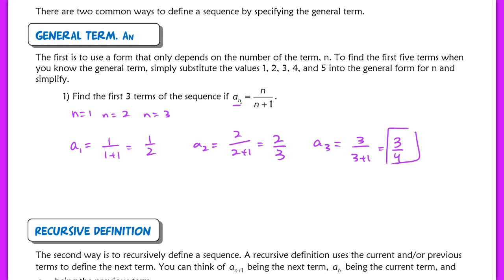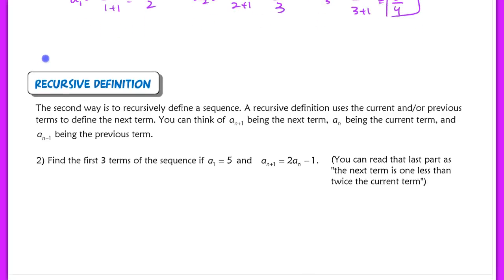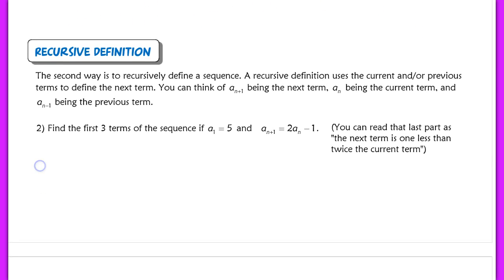Sometimes a sequence is defined recursively. A recursive definition means you have to know the current or previous term to define the next term. So a sub n plus 1 is the next term, a sub n is your current term, and a sub n minus 1 is your previous term. You can recognize a recursively defined sequence because the definition uses a sub n — you have to know a sub n in order to calculate a sub n plus 1.